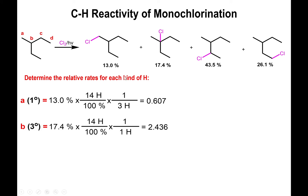Now type B: this carbon is connected to three other carbons, so it is a tertiary carbon. The percentage yield is 17.4. We divide by 100 and multiply by 14 hydrogens (the total in the reactant). Type B has only one hydrogen, so we divide by 1 H per molecule. Carrying out the calculation gives 2.436.